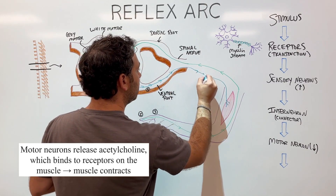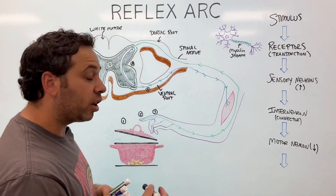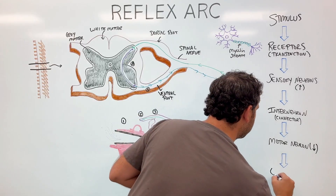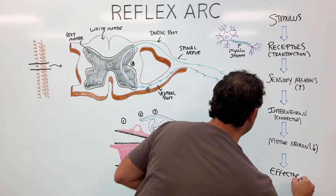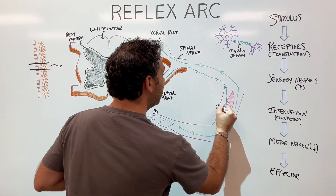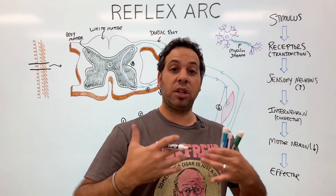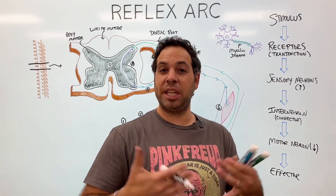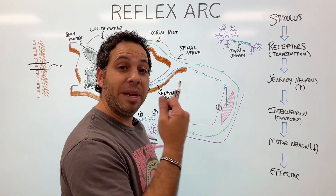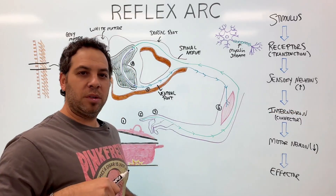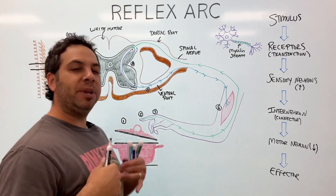At this point we reach the muscle, which we call the effector — number six, the final destination. An effector is anything that receives a signal and produces a response. Your glands can be effectors because they produce hormones, or a muscle can be an effector because it contracts. And what happens? Our hand moves away from the hot stove to protect ourselves.